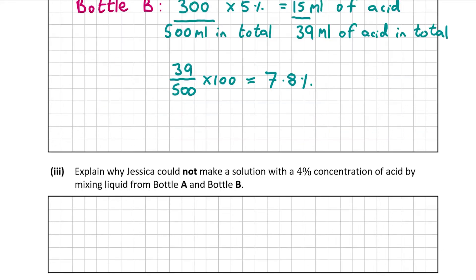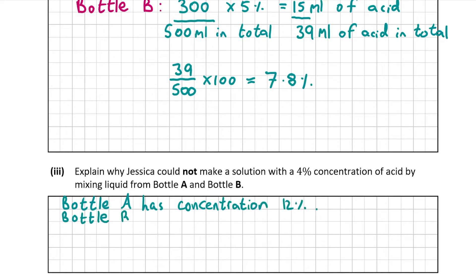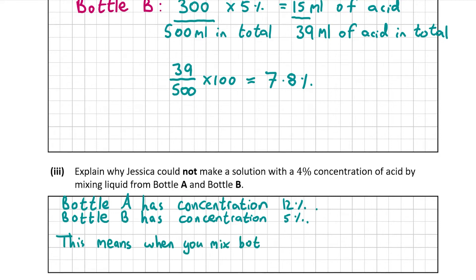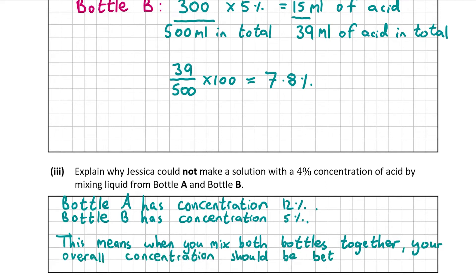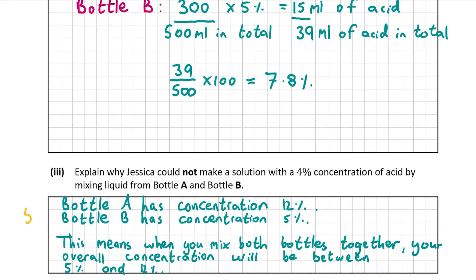Now let's have a look at part A3. This wants us to explain why Jessica could not make a solution with a 4% concentration of acid by mixing both bottles together. Bottle A has concentration 12% and bottle B has concentration 5%. So when you mix both together, your overall concentration has to be between 5% and 12% — you can never get a concentration outside of that range. So that's part A3 done, worth 5 marks. Part A2 was worth 10 marks and part A1 was worth 5 marks.